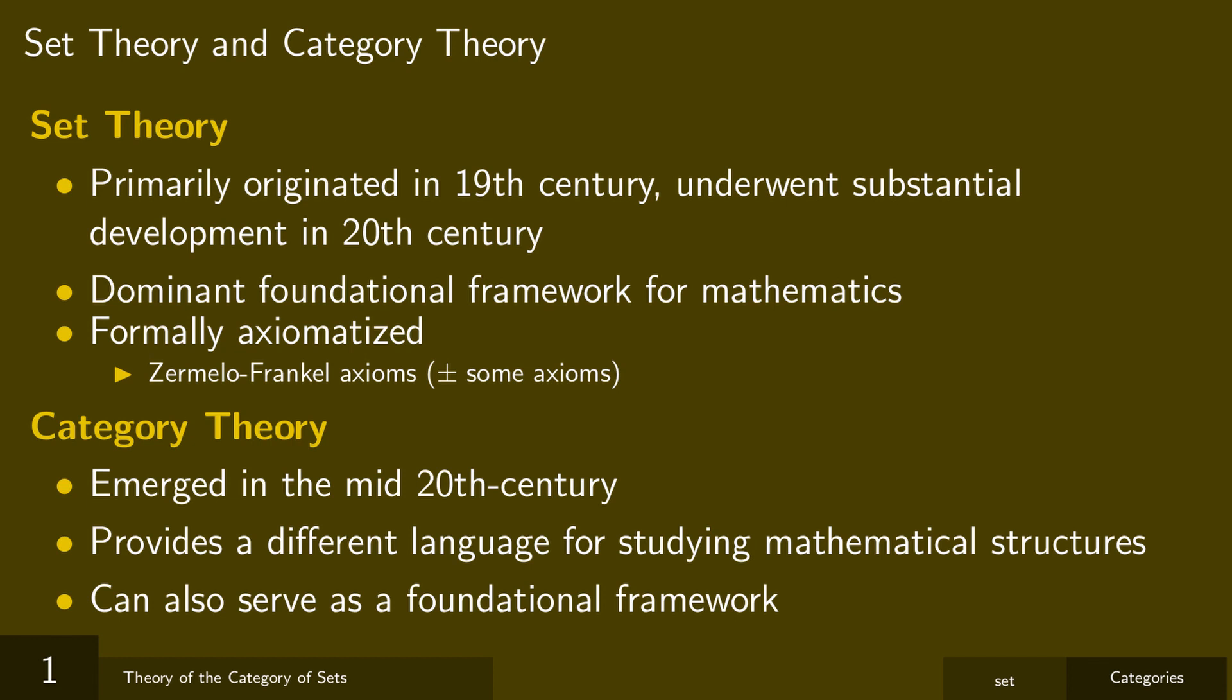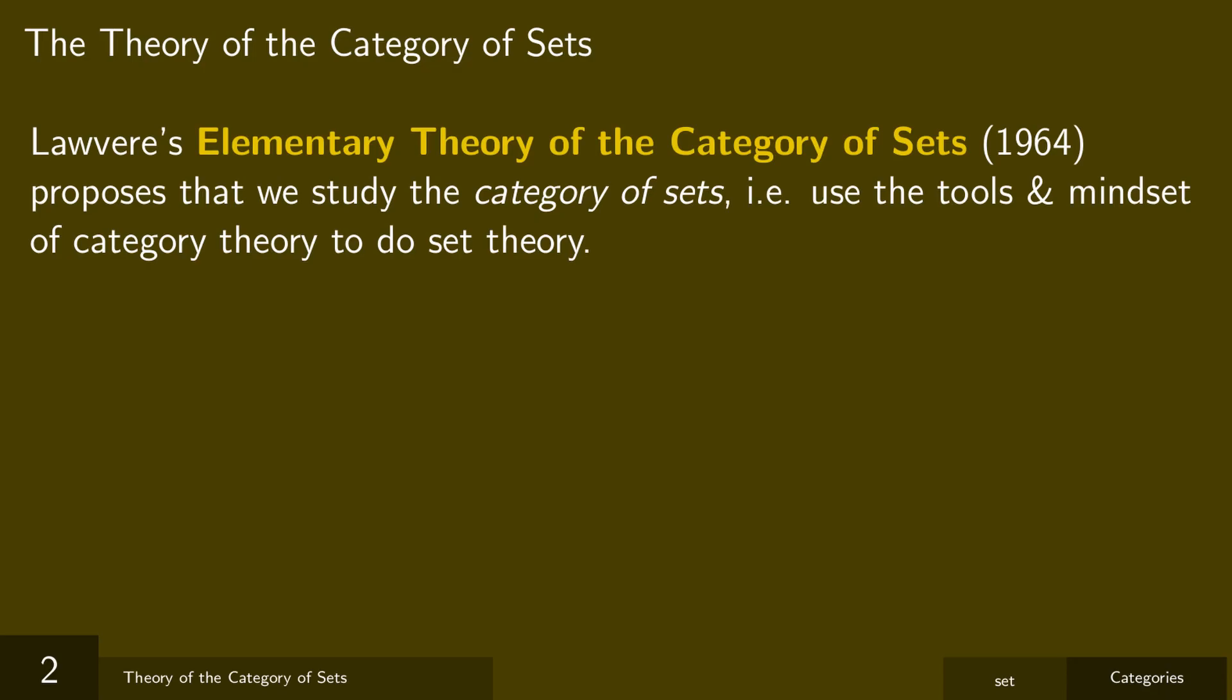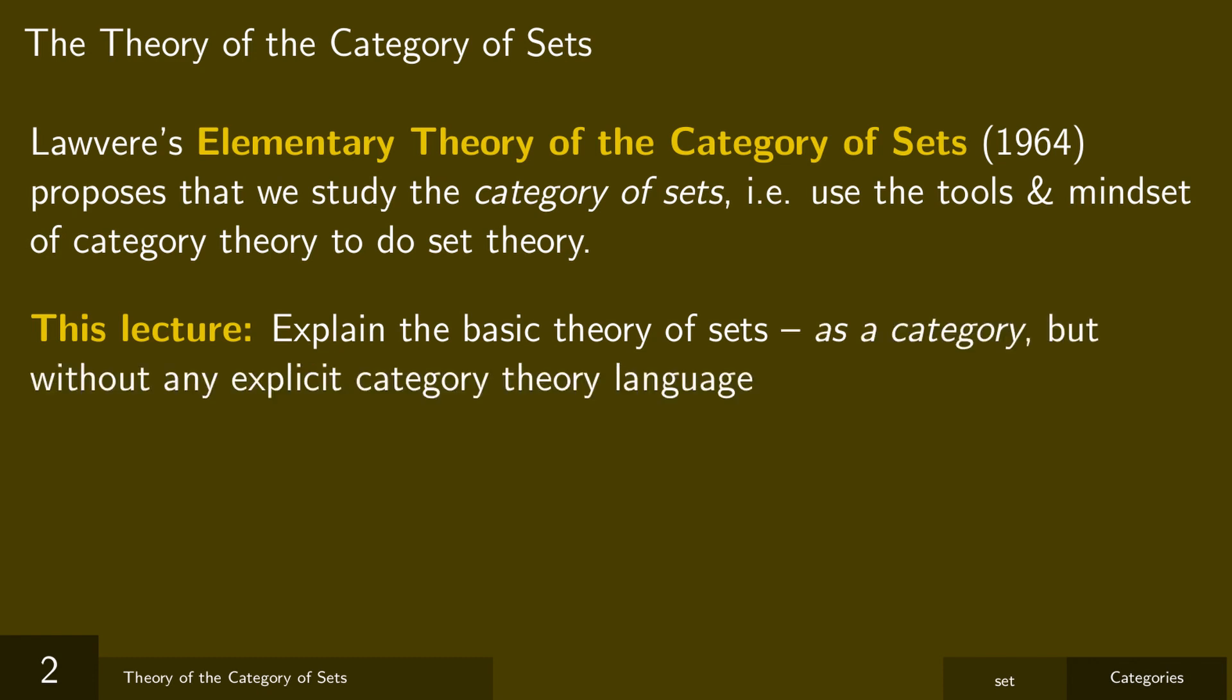One of the early recognizers of category theory's foundational potential was Bill Lawvere. His 1964 manuscript, An Elementary Theory of the Category of Sets, proposed a combination of the set and category-theoretic approaches, studying the category of sets. This video is loosely inspired by this paper. We're going to do a bunch of category theory, but we won't need to mention categories once. Everything will be phrased in terms of sets.